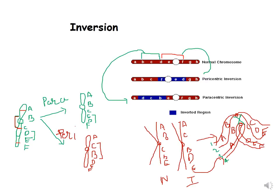In this picture we can see a normal chromosome with genes in the order A, B, C, D, E, F, G, H. In pericentric inversion, the inverted region is F, E, D and since it includes the centromere we call it pericentric inversion. In paracentric inversion, the inverted region is D, C, B and since it does not include the centromere we call it paracentric inversion.